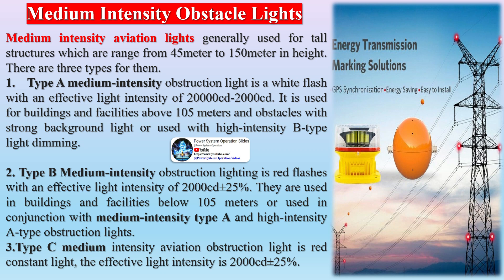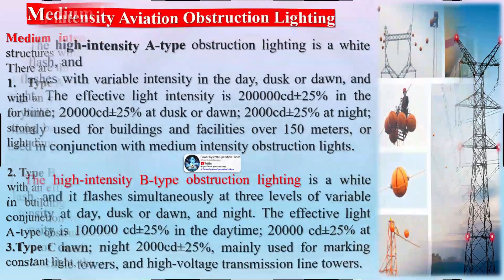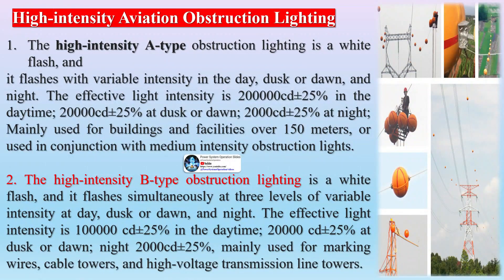Medium-intensity aviation obstruction lights — in FAA standard, the L864 obstruction light flashes red light, while the L865 type is white flashing. They are mainly used for obstacles ranging from 105 meters to 150 meters in height.